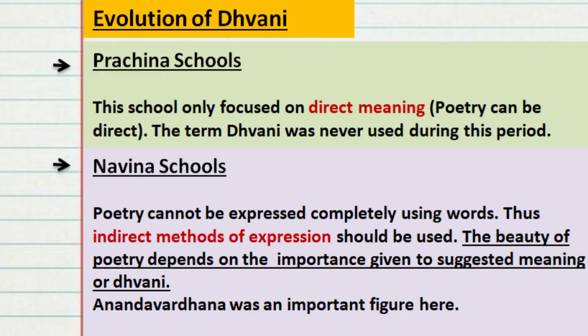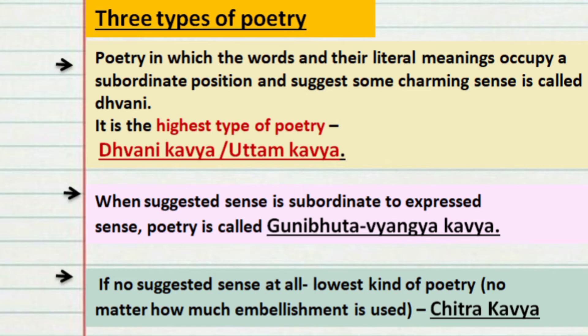Anandavardhana was a major figure during this time. The beauty of poetry, they said, depends on the importance given to suggested meaning or Dhvani. Even though Dhvani is important in poetry, it is not necessary that every poem was written using Dhvani. So they divided poetry into three types: Dhvani Kavya or Uttam Kavya, then the Guni Buddha Vyengya Kavya, and the Chitra Kavya.